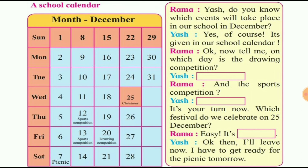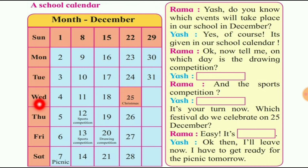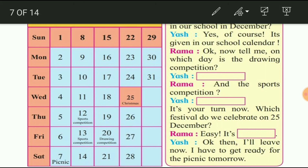Next: a school calendar. Look at this calendar. Read the calendar — days and dates. Month: December. December month calendar days: Sunday, Monday, Tuesday, Wednesday, Thursday, Friday, and Saturday — short form.